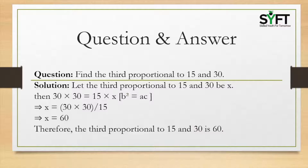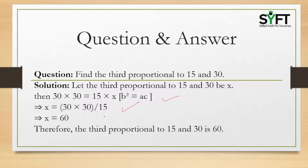Question 2: Find the third proportional to 15 and 30. Solution: Let the third proportional to 15 and 30 be x. Then, according to the question, 30 into 30 is equal to 15 into x. This is because b squared is equal to a times c, as per the third proportional rule. So, b means 30 squared is equal to 15 into x. This implies x equal to 30 into 30 by 15. Cancelling 15, we get 2 into 30, that is 60. Therefore, the third proportional to 15 and 30 is 60.